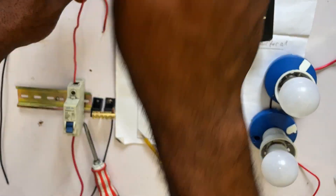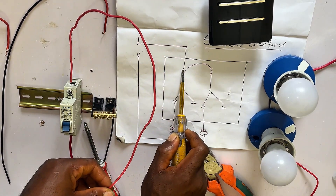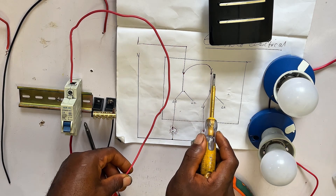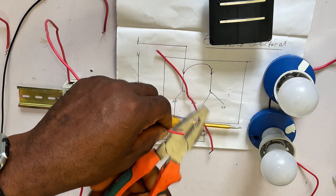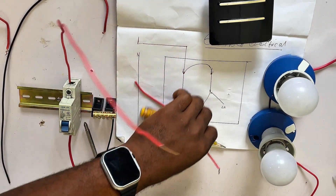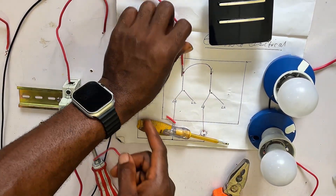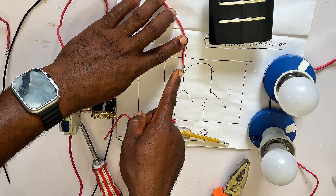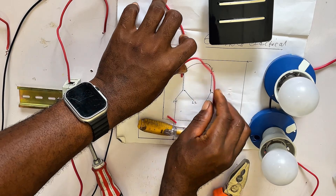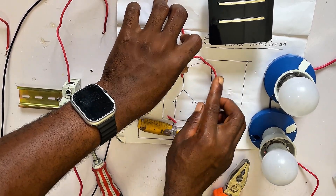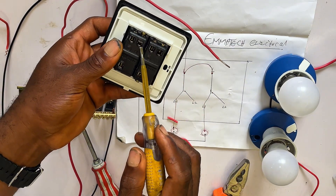Now here is the live wire from our breaker. I'm going to connect this live wire to L of the first gang. Then from that first gang I loop to L of the second gang. You connect your live wire to L — the common terminal of the first gang — then from that L you loop another wire to the second L, which is the common terminal of the second gang.